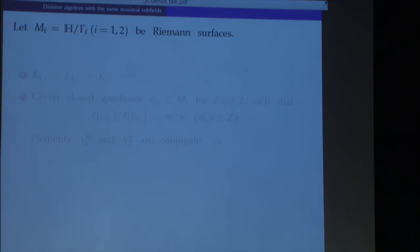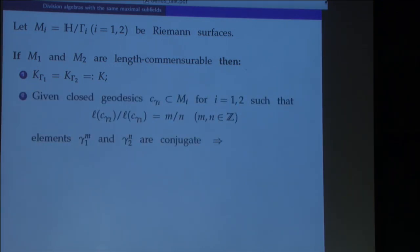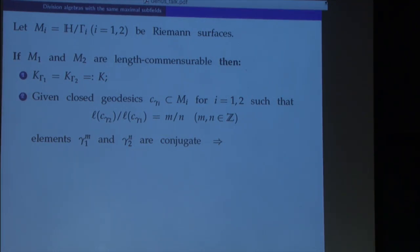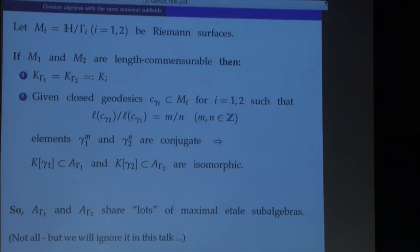Returning to our Riemann surfaces: suppose we have two Riemann surfaces corresponding to subgroups gamma_1 and gamma_2, and assume they are commensurable. Then first, one proves that they have the same trace subfield. If we have closed geodesics in each of those Riemann surfaces and the ratio of the lengths is a rational number, we get that some power of gamma_1 is conjugate to some power of gamma_2, implying that the algebras generated by gamma_1 and gamma_2 are actually isomorphic. So if our Riemann surfaces happen to be length commensurable, then the corresponding quaternion algebras have lots and lots of common étale subalgebras.